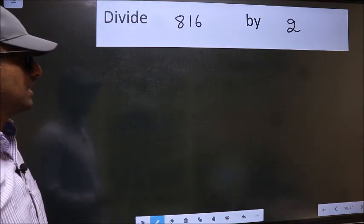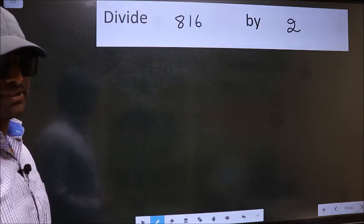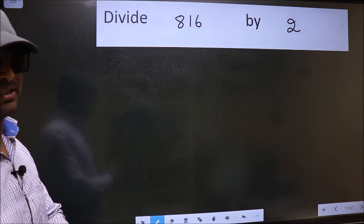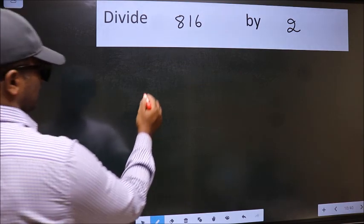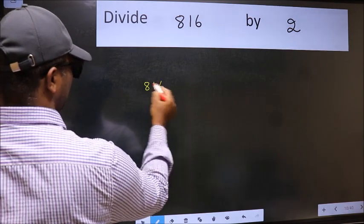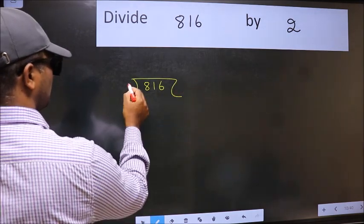Divide 816 by 2. To do this division, we should frame it in this way: 816 and 2 here.